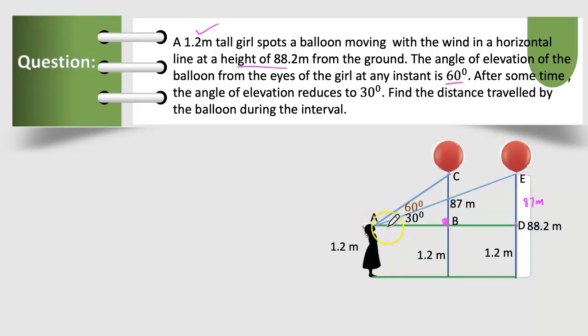First triangle ABC, the angle of elevation is 60°, while ADE, the angle of elevation is 30°.